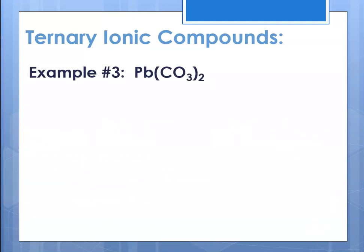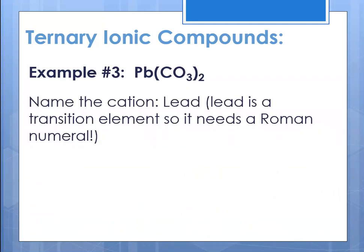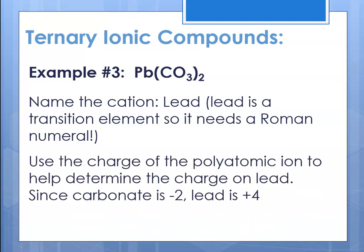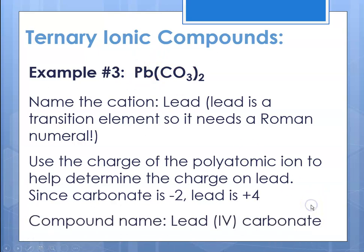Ternary ionic compound example three is Pb(CO₃)₂. Name the cation — lead. Lead is a transition element, so it needs a Roman numeral. Use the charge of the polyatomic ion to help determine the charge on lead. Since carbonate is negative two, and there are two carbonates — two times negative two is negative four — in order to be neutral, lead has to be plus four. So the compound name is lead(IV) carbonate.